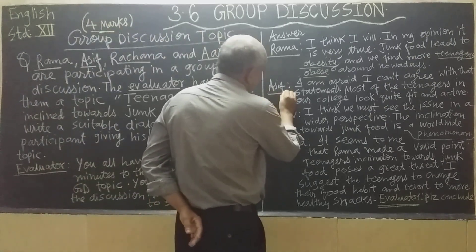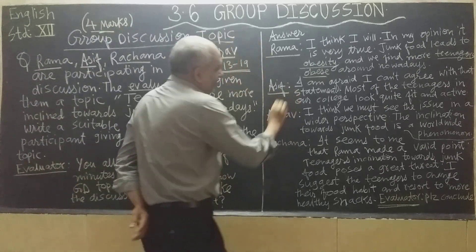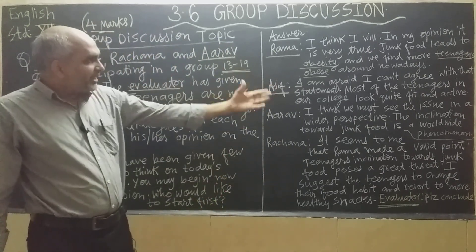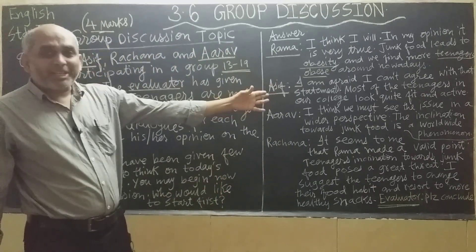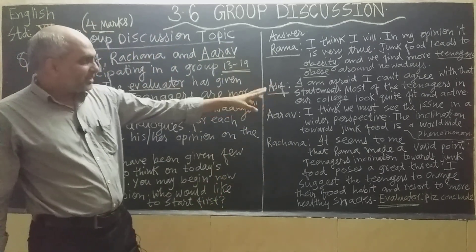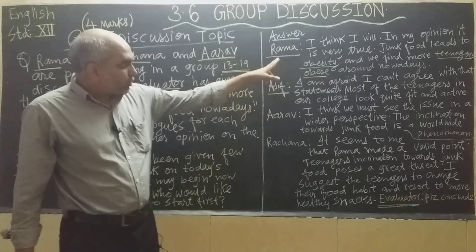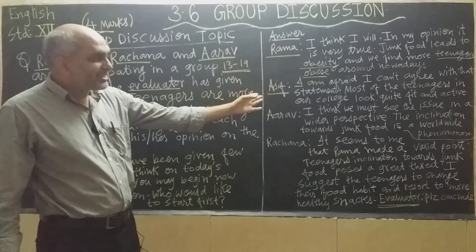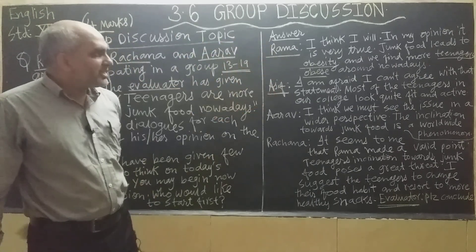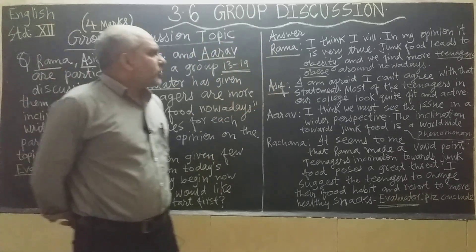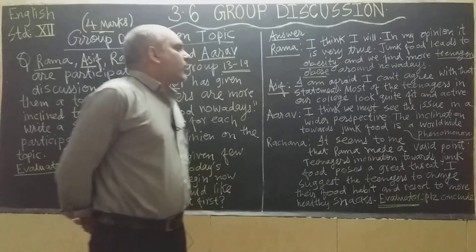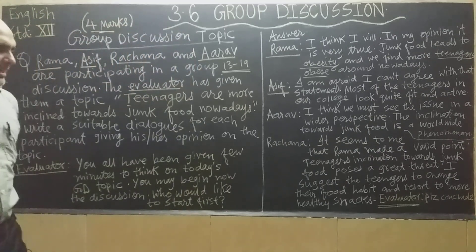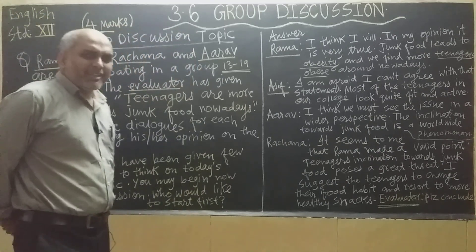The second candidate, Asit, opposes the first candidate, saying: 'I am afraid I can't agree with that statement. Most of the teenagers in our college are quite fit and active.' So the second candidate disagrees with what candidate number one has said.